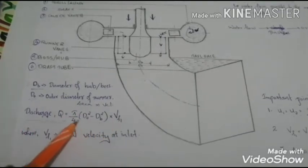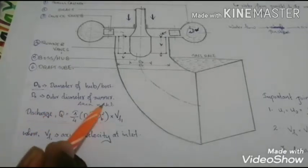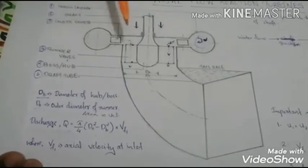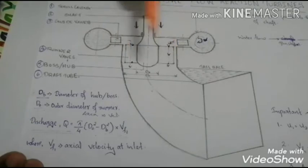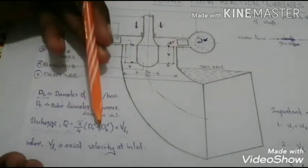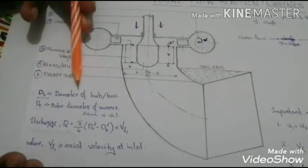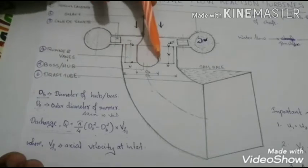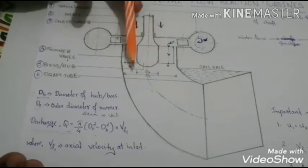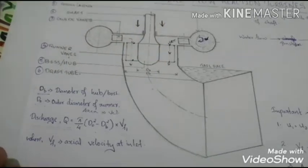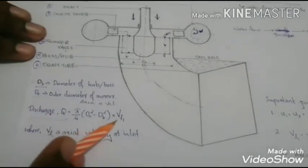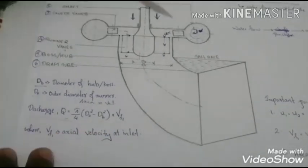Here the dimensions DO is given by the outer diameter of the runner. So this is the runner. Outer diameter of the runner represents DO. And DB is given by the diameter of the boss. And VF1 in this expression is the axial velocity at the inlet point.